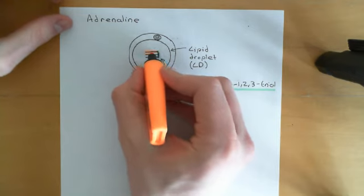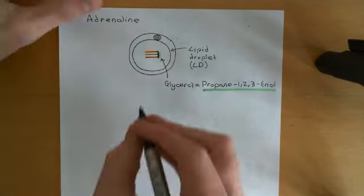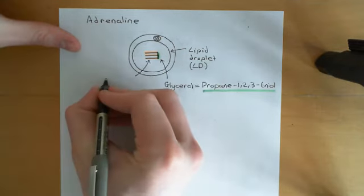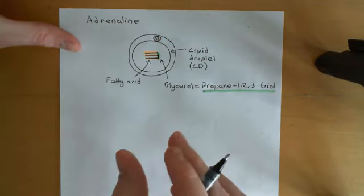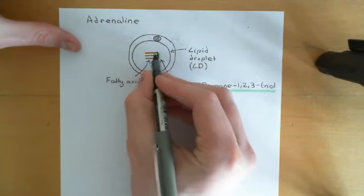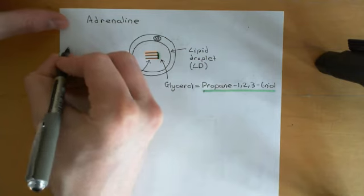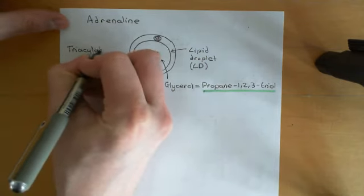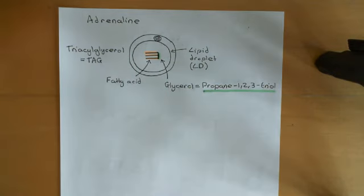To create the triacylglycerol, you attach three long-chain carboxylic acids, or fatty acids, onto each one of those alcohol groups coming off the glycerol molecule. These horizontal lines in orange represent the fatty acids — really long, hydrophobic carboxylic acids. The carboxylic acid group is esterified to the alcohol groups of the glycerol molecule, and that creates a triacylglycerol molecule, abbreviated as TAG: T for tri, A for acyl, G for glycerol. This is the main type of fat molecule stored within adipocytes.